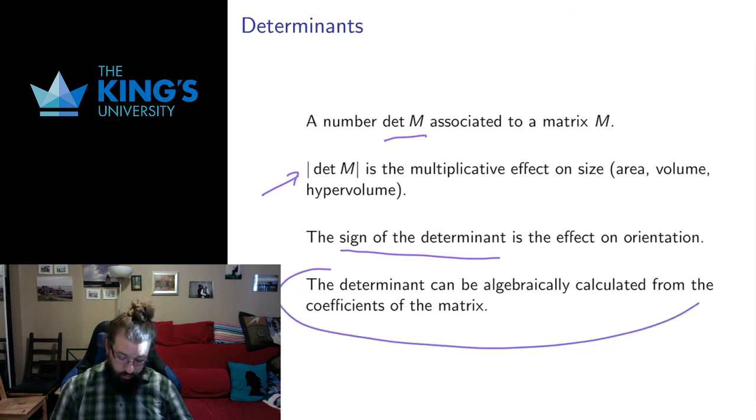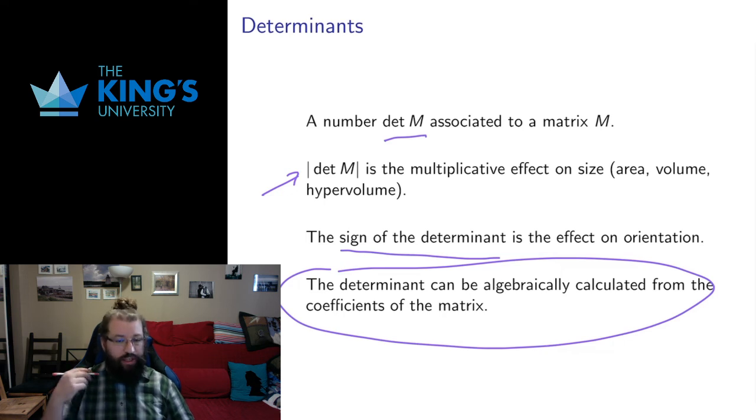And this thing, this determinant, this number associated to a matrix, you can get it algebraically from the coefficients of the matrix. And that's a really remarkable thing. There's going to be some algebraic formula, which we'll get to in the next video, that tells us exactly what's going on with the effect of size and the effect of orientation.